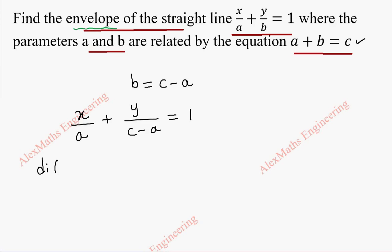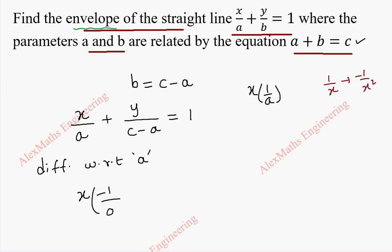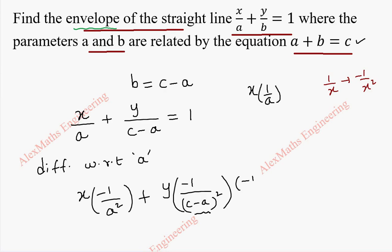We are going to differentiate this with respect to a. So, other than a, the rest are constants. Now, x/a means x is a constant and this is 1/a. So we differentiate 1/a — as per the rule, the differentiation of 1/x is -1/x², so 1/a differentiates to -1/a². Plus y is a constant, and 1/(c-a) becomes -1/(c-a)² and by chain rule, the differentiation of (c-a) gives -1. The other side we have 1, which becomes 0.